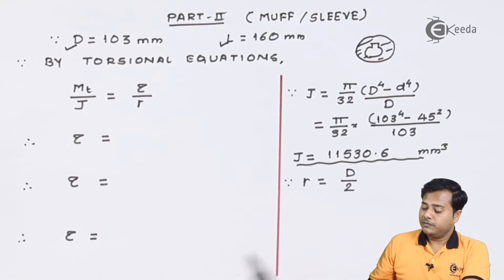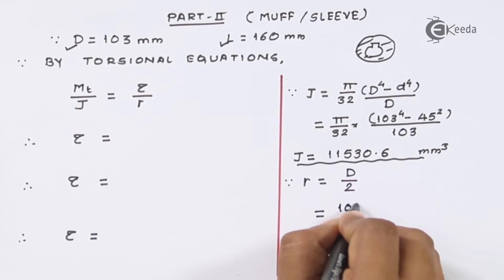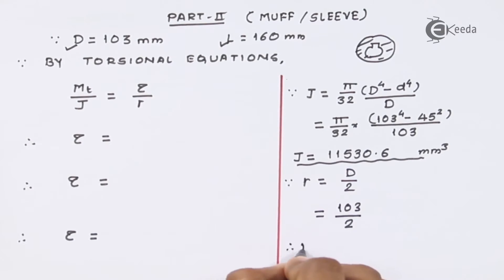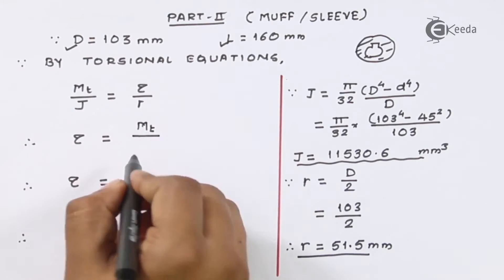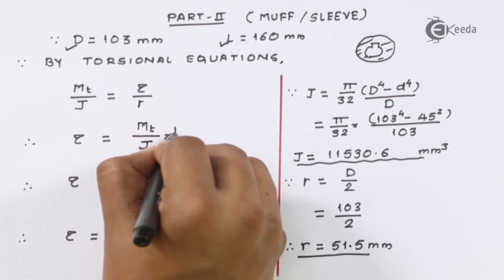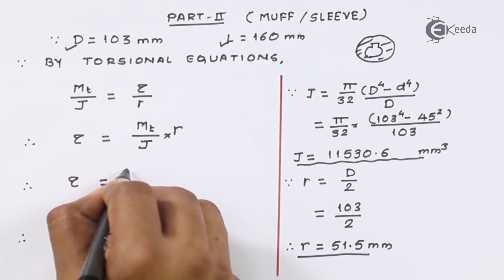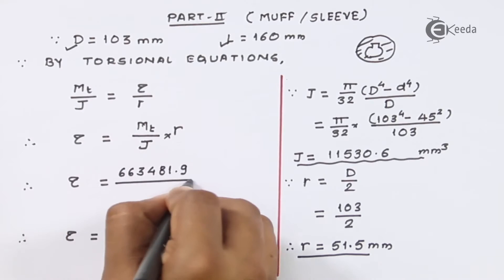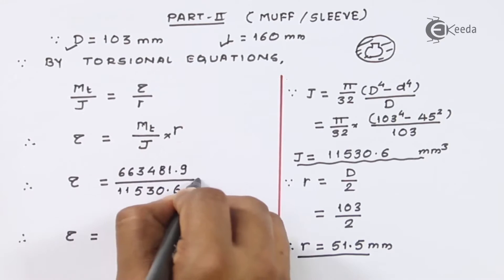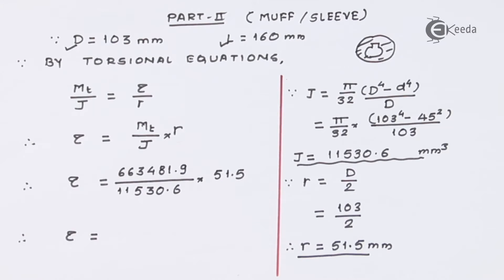The second thing is radius which is the extreme fiber radius. In this case it becomes 103 divided by 2 and therefore R value comes out to be 51.5 millimeter. Now these two parameters we are going to use here. The torsional value τ is equal to Mt divided by J into R. As we solve this expression we get the answer for tau somewhere equal to 3.09 newton per millimeter square.